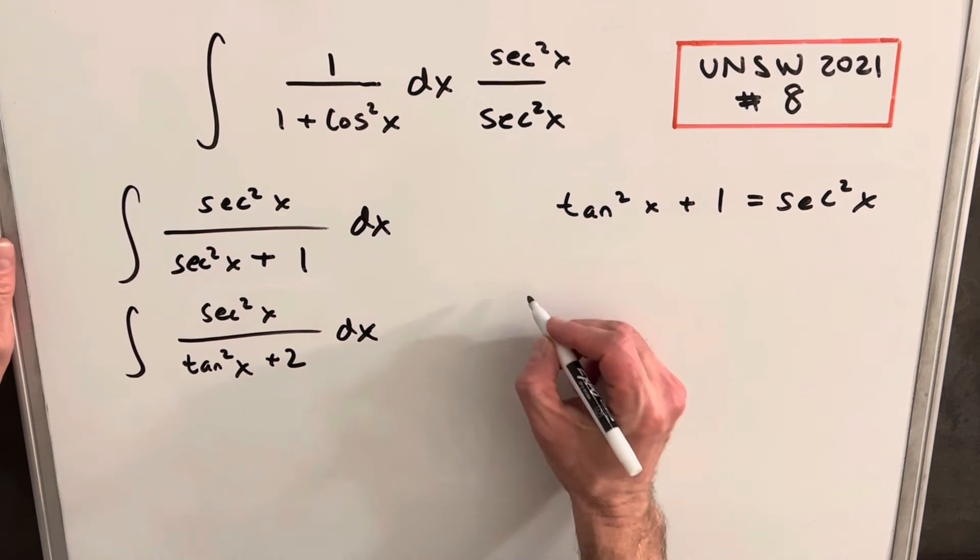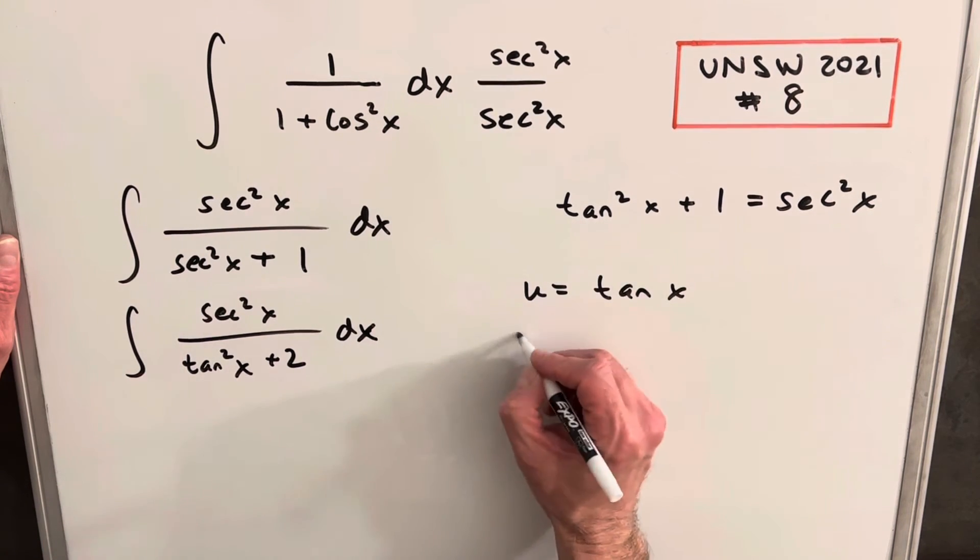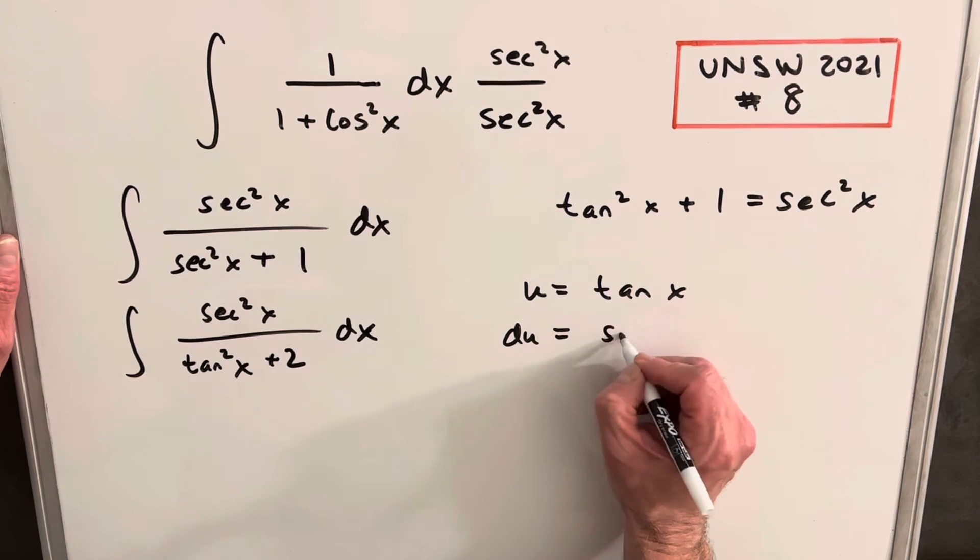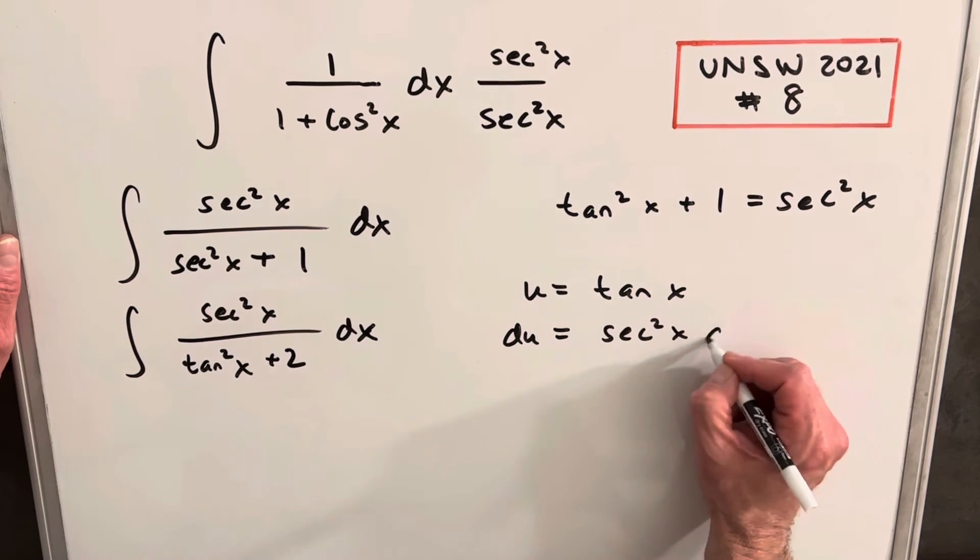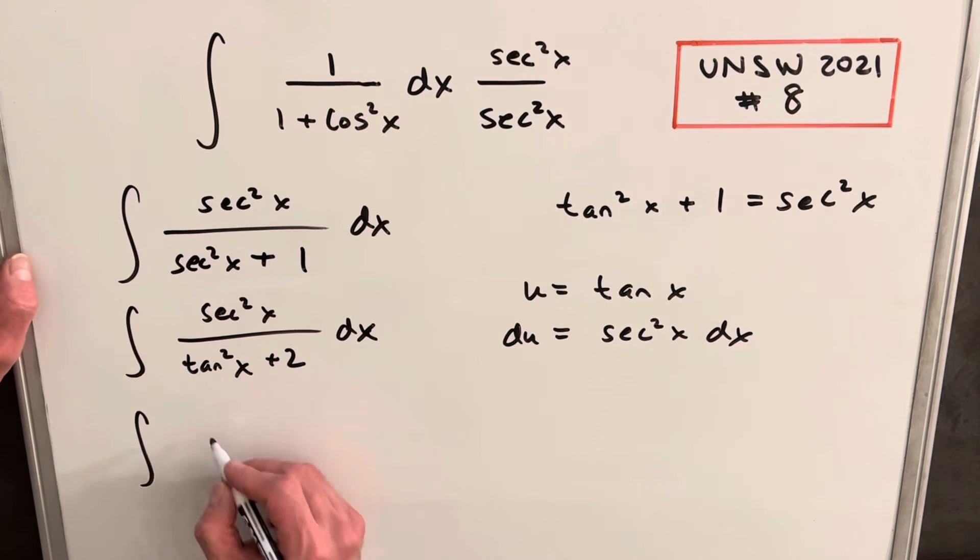And then from here, I'm going to make my u substitution. I'm going to call my u tan x and our du differentiating is going to be secant squared x dx. And we just notice that's exactly what we have here in the numerator. So this is going to work out nice.